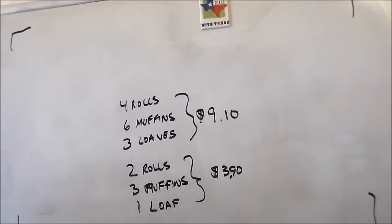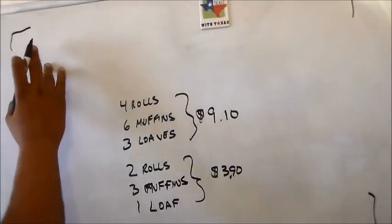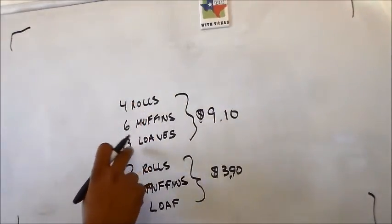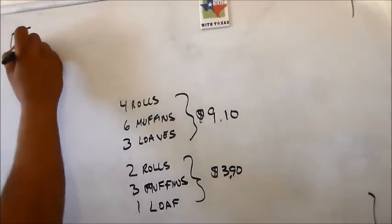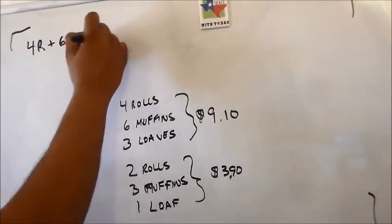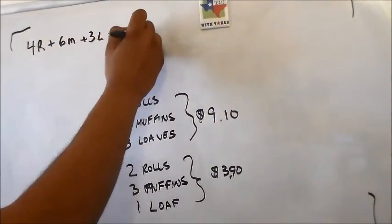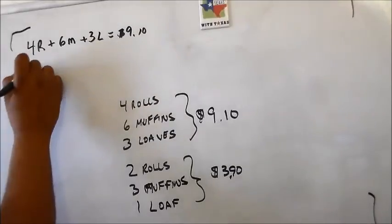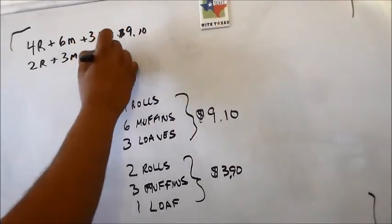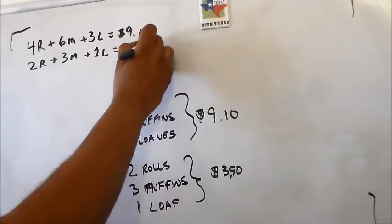In this case, I'm going to use a system of equations. We're going to let R represent rolls, M represent muffins, and L represent loaves. So equation one: 4R + 6M + 3L = $9.10. And equation two: 2R + 3M + 1L = $3.90.